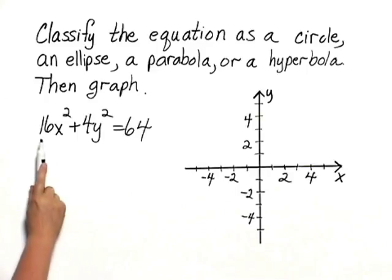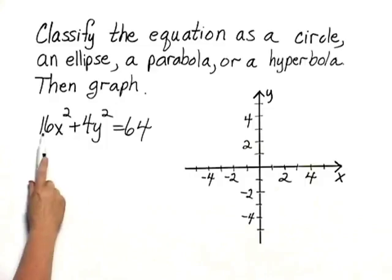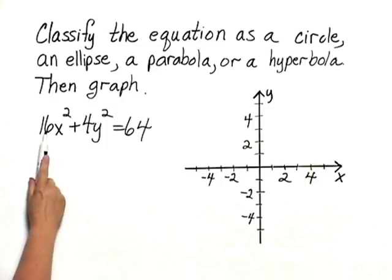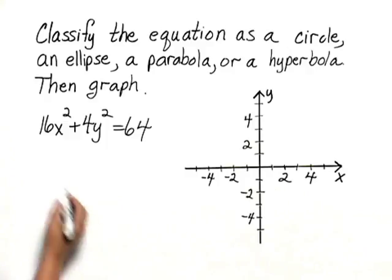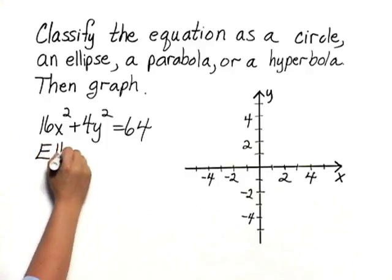We have an x squared term and a y squared term. They are added together, so it's not a hyperbola. The coefficients are different, so we don't have a circle. Instead, we have an ellipse.